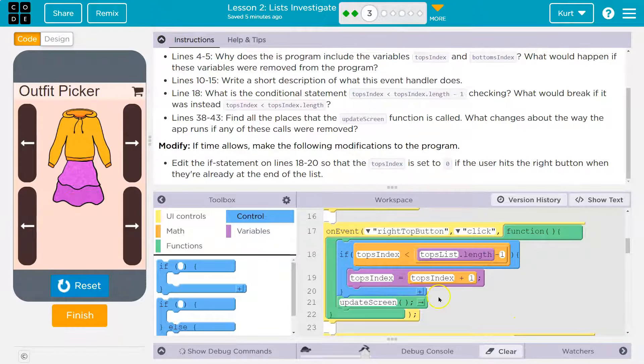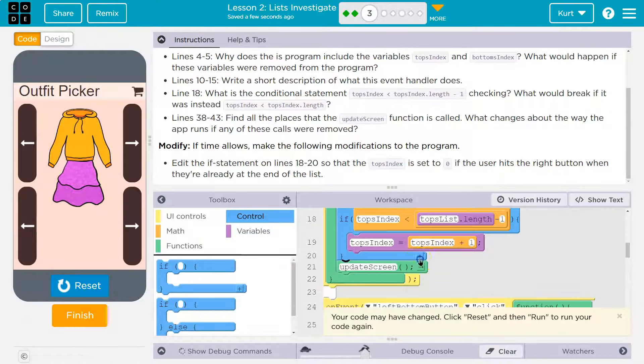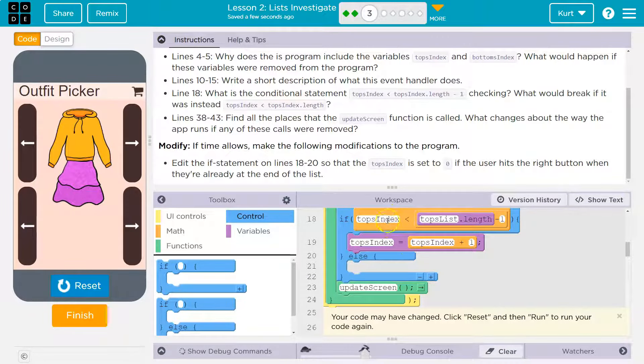So let's go ahead and, here lines 18, I'm going to add in another if. And I want to do it under this. And let's see, once again, edit if statement on line 18 through 20 so that the top index is set to zero if the user hits the right button when they're already at the end of the list. So if top index is greater than topless.length minus one or is less than, oh, I don't need another if. I need an else.